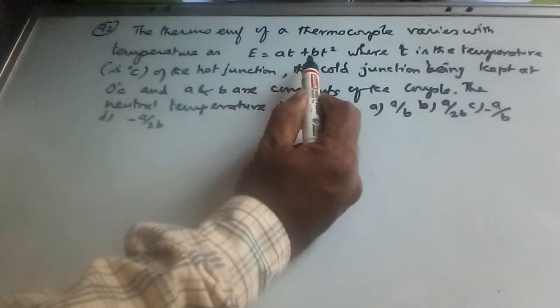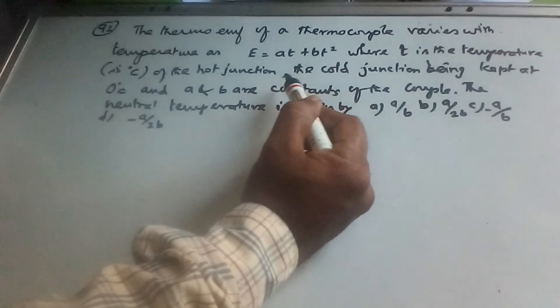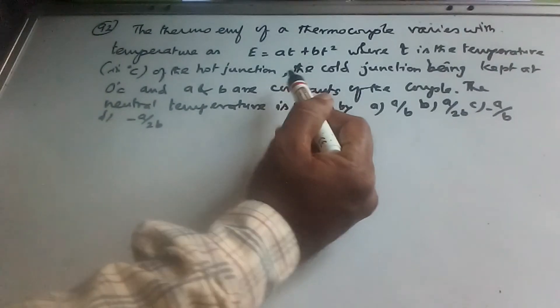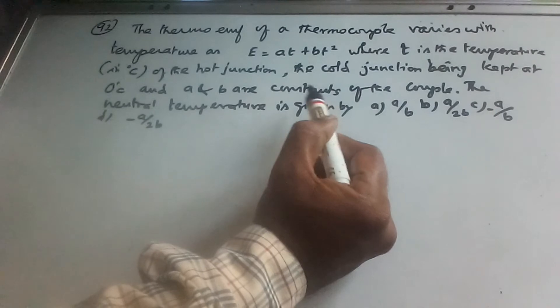The equation is E equal to AT plus BT squared, where T is equal to the hot junction temperature in degree Celsius. The cold junction is at zero.